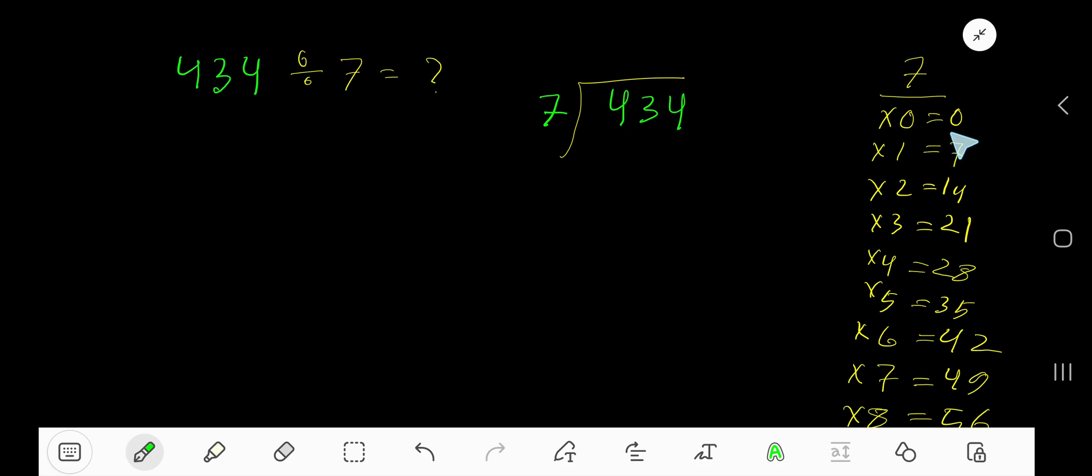To find the multiplication table of 7, just add 7 with the previous step: 0 plus 7 is 7, 7 plus 7 is 14, 14 plus 7 is 21, 21 plus 7 is 28, 28 plus 7 is 35. 7 goes into 4 how many times? 0 times.